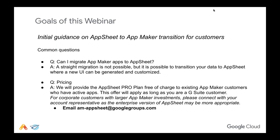For many of you, you'll see that the AppSheet Pro plan on our website is listed as having Cloud SQL as an additional add-on. However, we've made a special plan available for everybody who is a current AppMaker user so that you can take advantage of Cloud SQL free of charge, as well as the AppSheet Pro plan for free, as long as you are a G Suite customer.